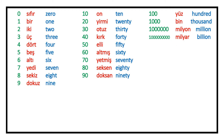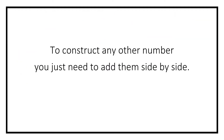Now, I don't go further to cover trillion or quadrillion and so on. But the numbers you see on this page are all the basics that you need to construct any other number in Turkish language. So how do you do it? To construct any other number in Turkish language, you just need to add them side by side, which is very similar to what we do in English.